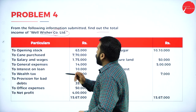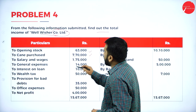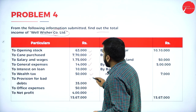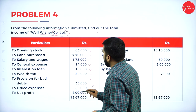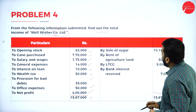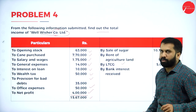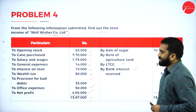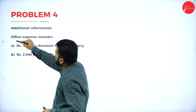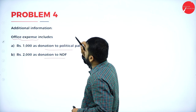From the following information submitted, find out the total income of Well-Wisher Company Limited. On the debit side: opening stock 63,000; cane purchased 7,70,000; salary and wages; general expenses; interest on loan; wealth tax; provision for debtors; office expenses; net profit; and total. On the credit side: sale of sugar; rent of agricultural land; LTCG (long-term capital gain); bank interest received. Adjustments: office expenses include donation to political party and donation to NDF.